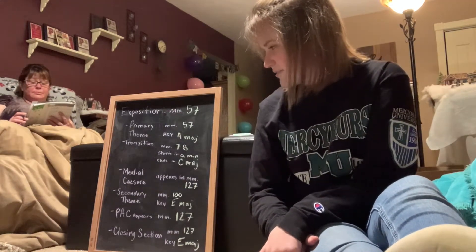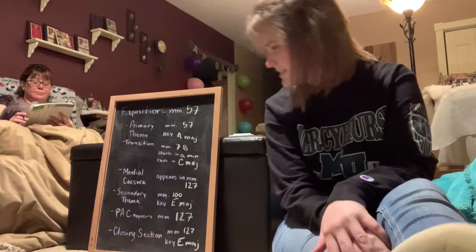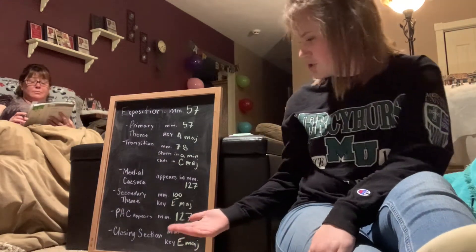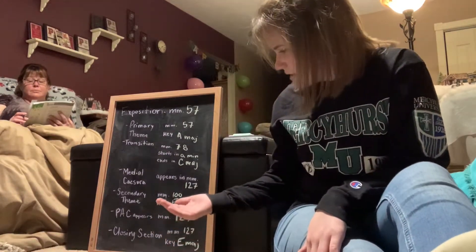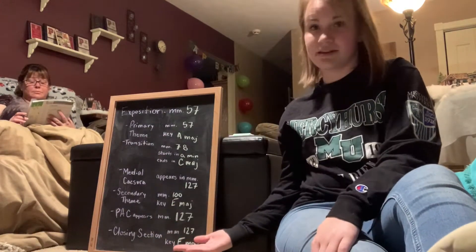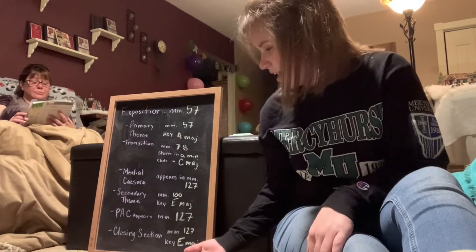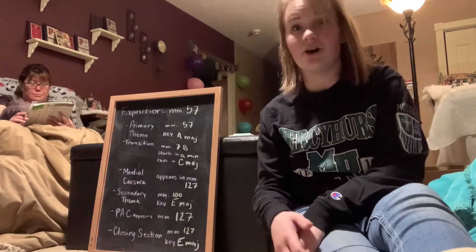Up next we have the medial cajura, appearing in measure 127. Then we have the secondary theme in measure 100 in the key of E major. Following that, we have the pack that appears in measure 127. And the closing section starts on measure 127, also in the key of E major. Jackson, you're doing great. Such good notes. I'm proud of you.